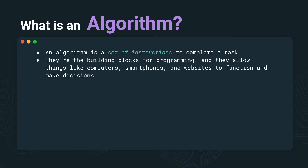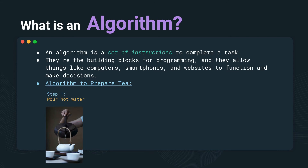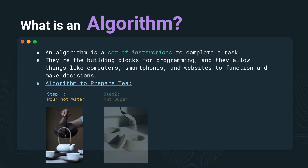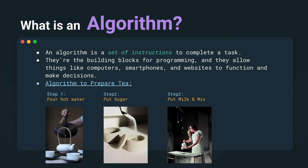It could be as simple as preparing tea. If you want to prepare tea, there are certain steps you take — for example, you pour hot water into the kettle, you put sugar, you mix the sugar in, and then you put milk and mix that. So there are like three or four steps we take when we prepare tea, and that is nothing but an algorithm.